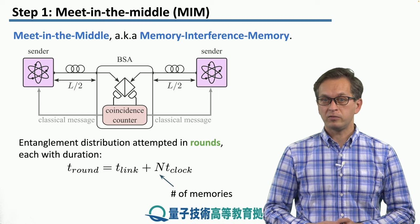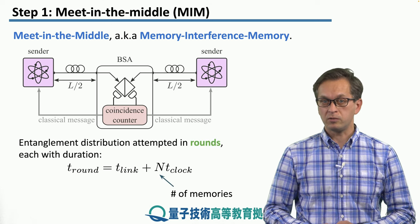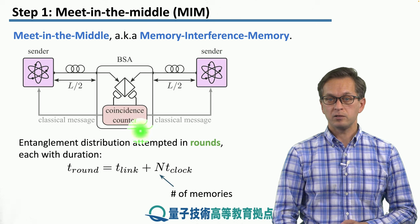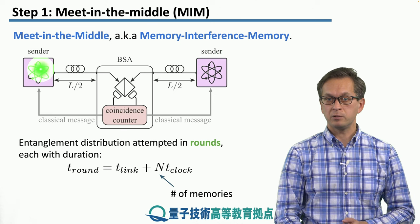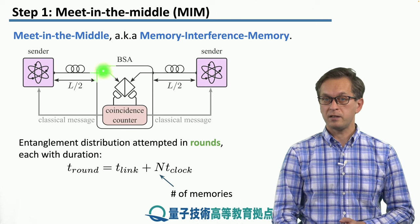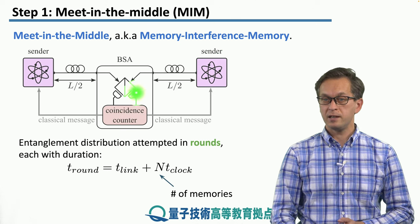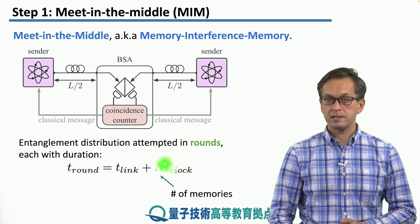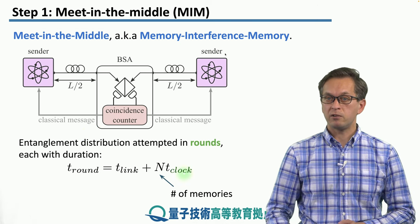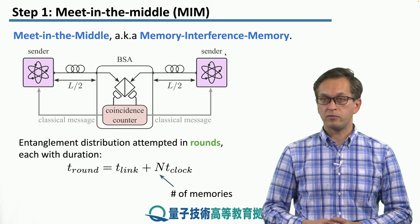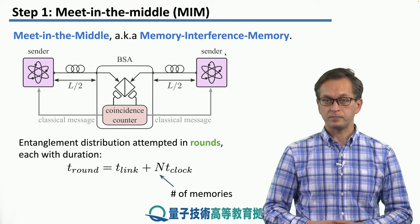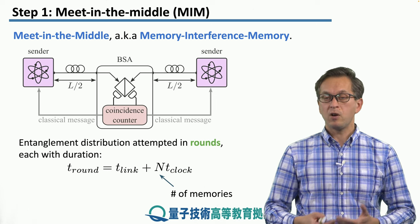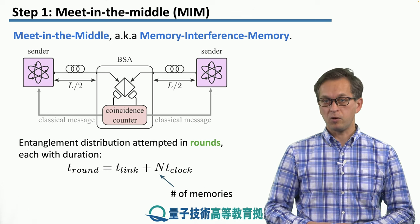Whether the measurement succeeded or failed is communicated back to the senders via the classical channel. The total time for one round is given by T-Link — the time it takes for a signal to travel from the sender to the BSA and for the classical message to return — plus the time it takes to generate N photons. Once the round is complete, we can attempt the whole process again.